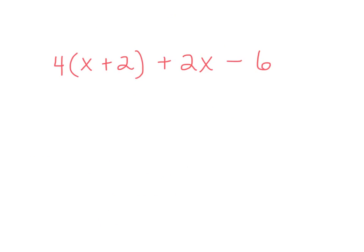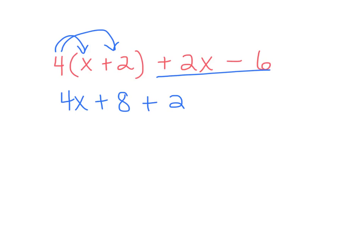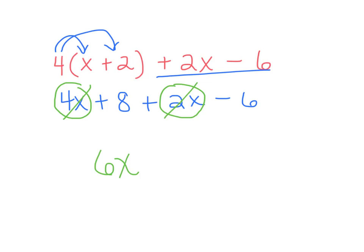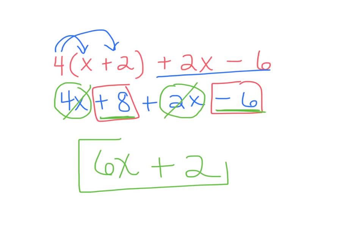Now let's try one where the directions say simplify as much as you can. First I see distributive property: multiply 4 times x, which is 4x. Keep the plus sign. 4 times 2 is 8. Now rewrite everything else: plus 2x minus 6. Now combine like terms — I circle 4x plus 2x, which gives me 6x. Then plus 8 minus 6 gives me plus 2. So the simplified expression is 6x plus 2.